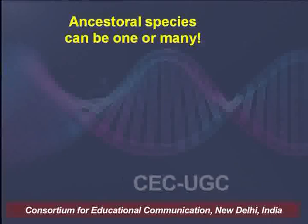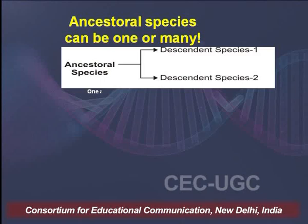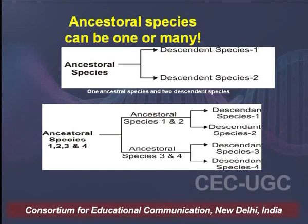Ancestral species — if we are talking of two species then we will have one ancestral species and depict one generation. But when we have more ancestral species, we take it back further, reaching more layers, meaning there will be many branches when we have more than one ancestral species.